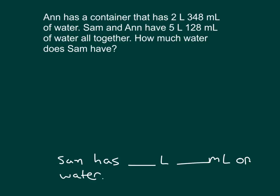Let's form a tape diagram. What are our knowns? What do we know? I think we know what Ann has. It says that Ann has 2 liters, 348 milliliters of water. So that's what Ann has.